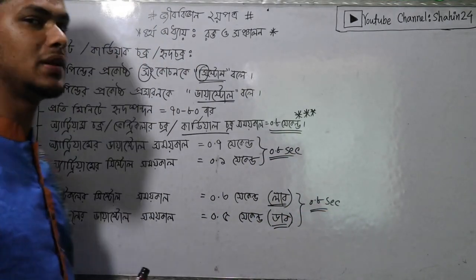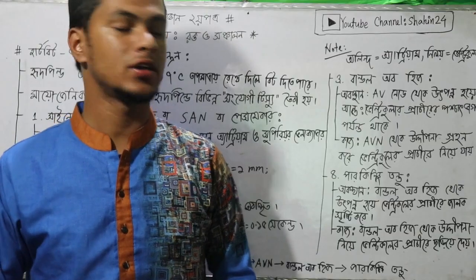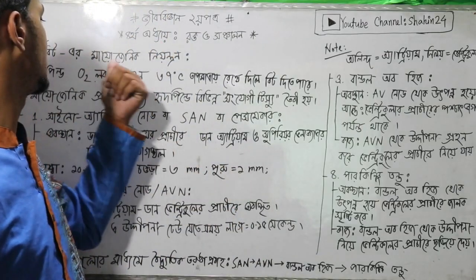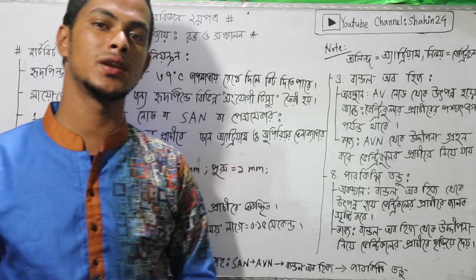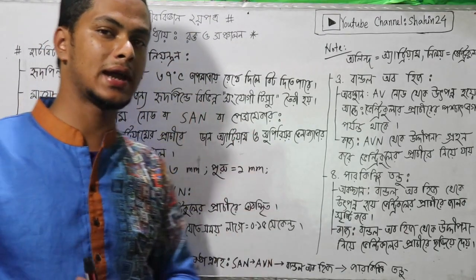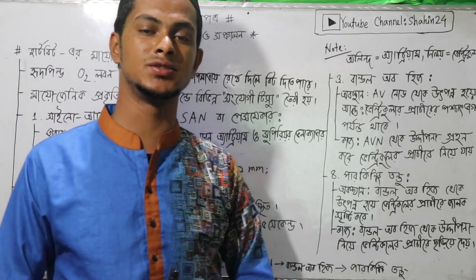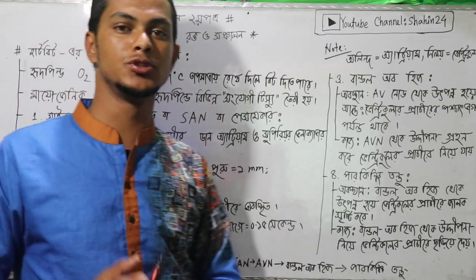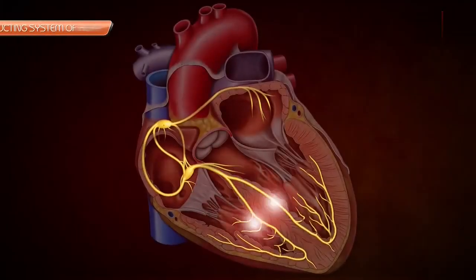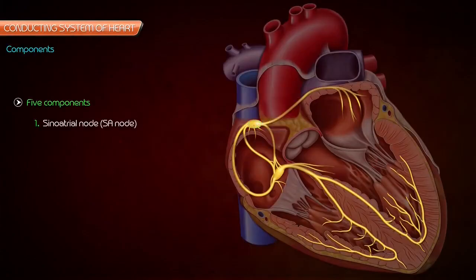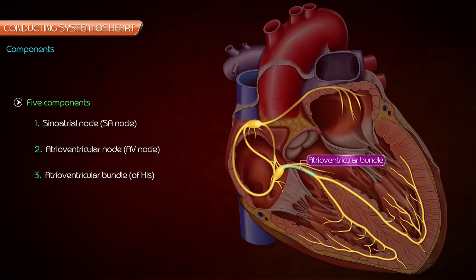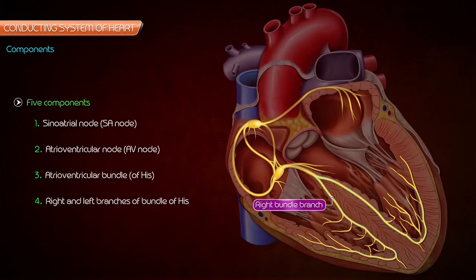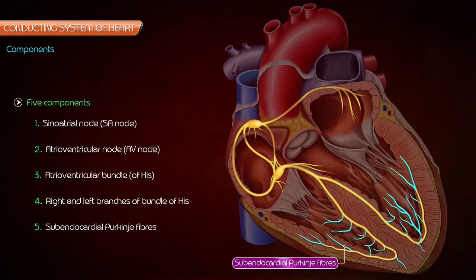We will learn a lot about the rhythm of the rhythm. We will talk about heart beat and myogenic ion. Before we talk about heart beat and myogenic ion, you will see a video animation. If you look at the heart beat and myogenic ion, we will do the same. Conducting system of the heart: Sinoatrial node. Atrioventricular node. Atrioventricular bundle. Right and left branches of bundle of His. Subendocardial Purkinje fibers.